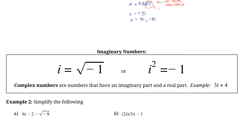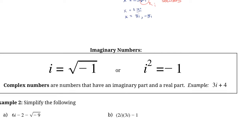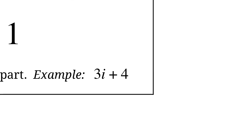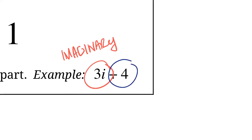Now, the other term and the name of this lesson is complex numbers. All a complex number is, is a number that has an imaginary part — so it's got an i in it — but it's also got real numbers in it. For example, 3i plus 4: the 3i part is called the imaginary part, and the 4 is the real part. So a combination of real numbers and imaginary numbers is called a complex number.